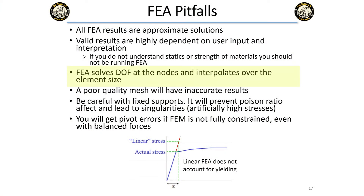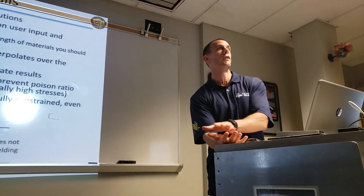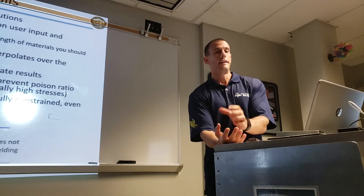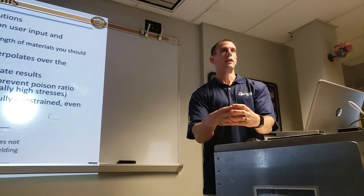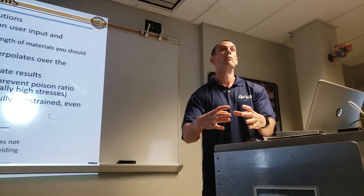The software solves at nodes and interpolates over the element — keep that in mind for mesh quality. You also need to be careful with fixed supports: they prevent the Poisson ratio effect and can lead to singularities. For example, if you do a solid mesh of a beam and fix all the nodes on the bottom face, then pull the beam, it wants to contract laterally due to Poisson's ratio but it can't, so you'll get artificially high stresses at the base.